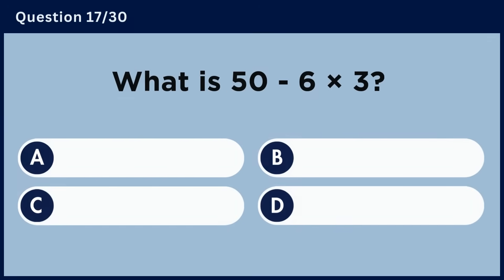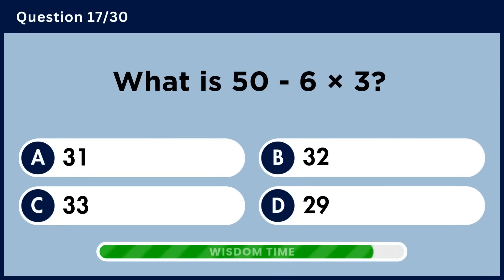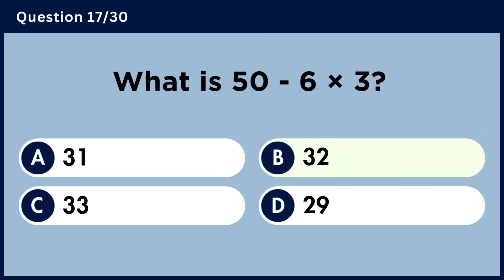What is 50 minus 6 multiplied by 3? Answer B: 32.